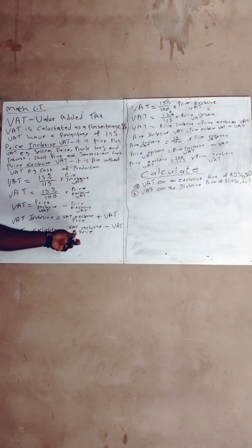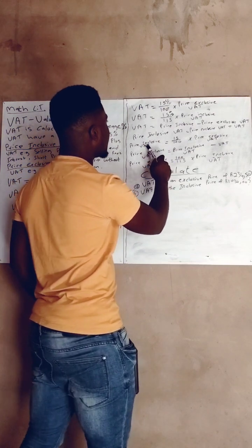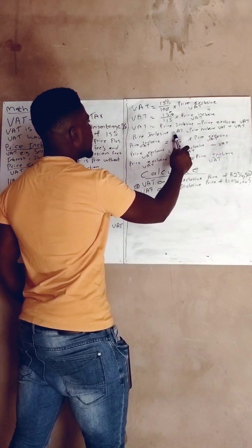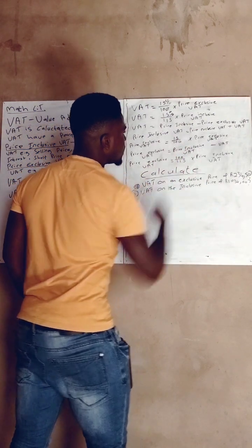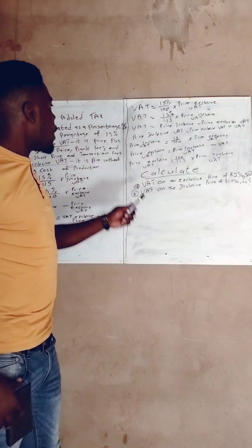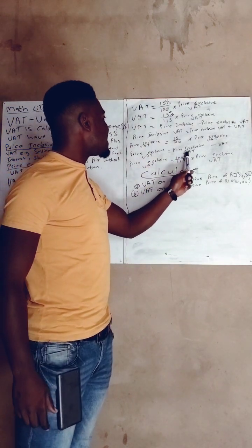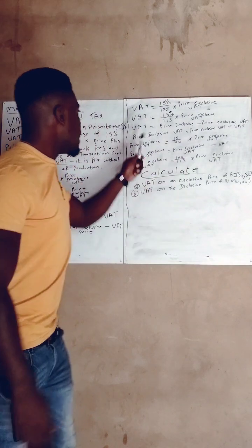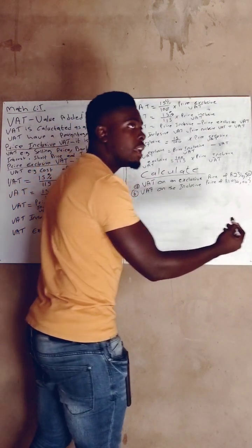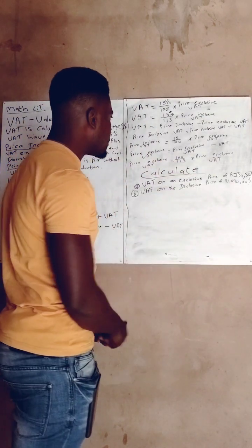Price inclusive is equal to price exclusive plus the VAT. Now, price exclusive of VAT means we take the inclusive price and work backwards. Remember: inclusive will give you exclusive, and exclusive will give you inclusive. Don't forget — once they say inclusive, the answer involves exclusive; when they say exclusive, the answer involves inclusive. Price exclusive equals price inclusive minus the VAT.